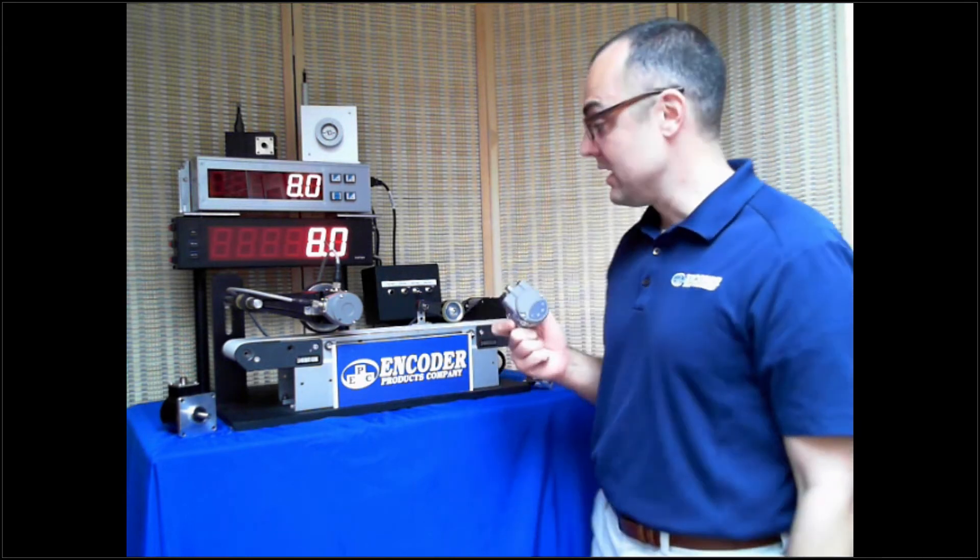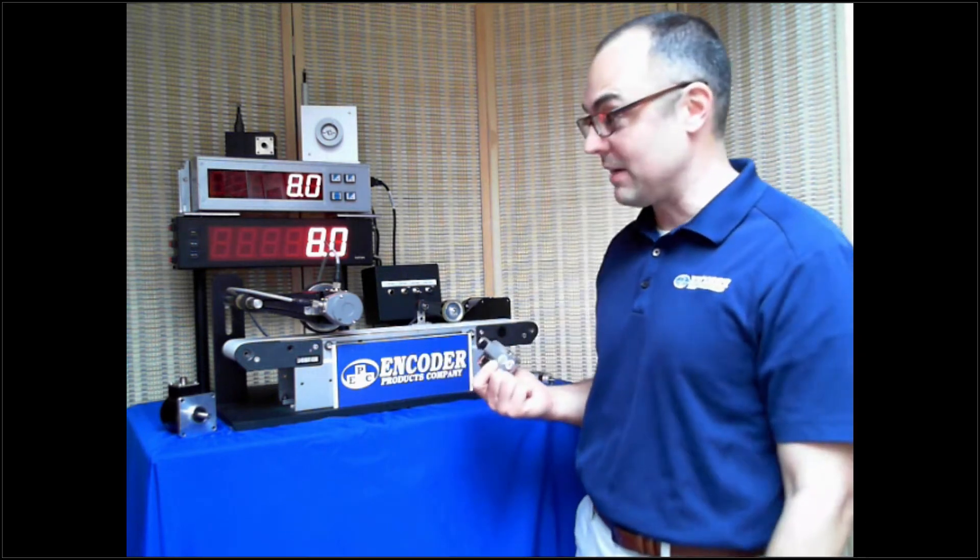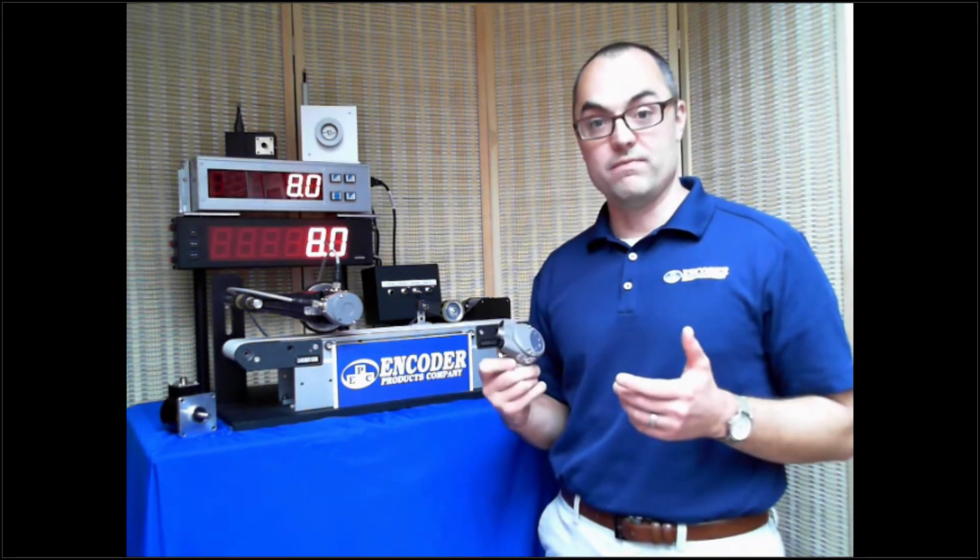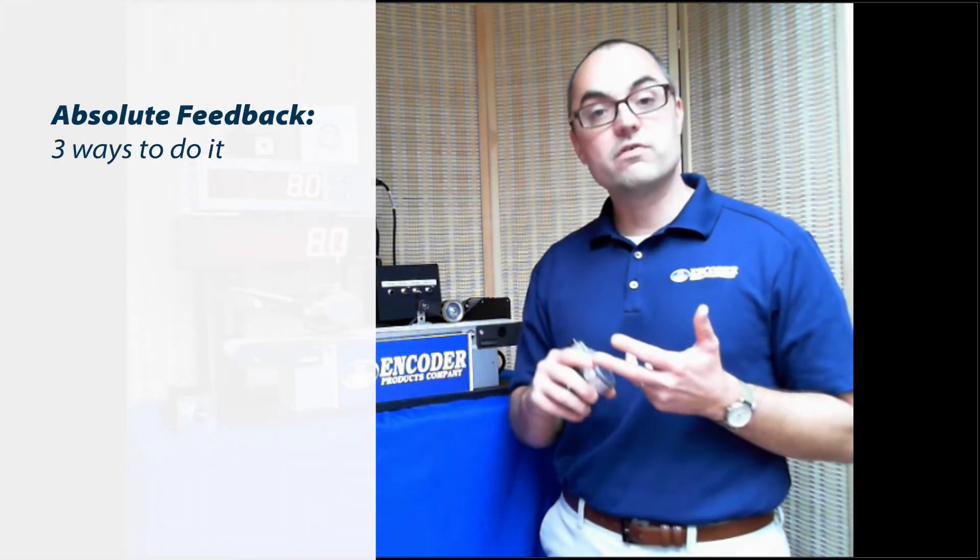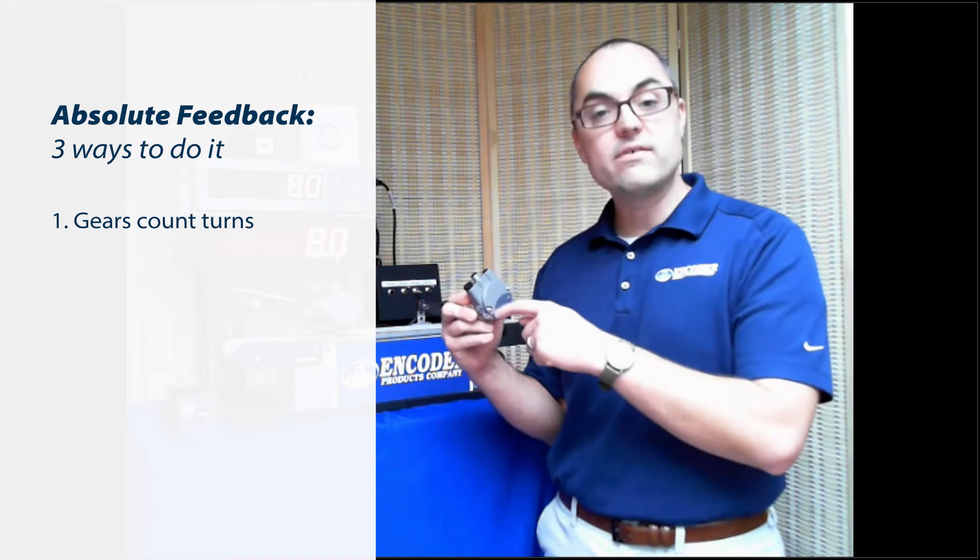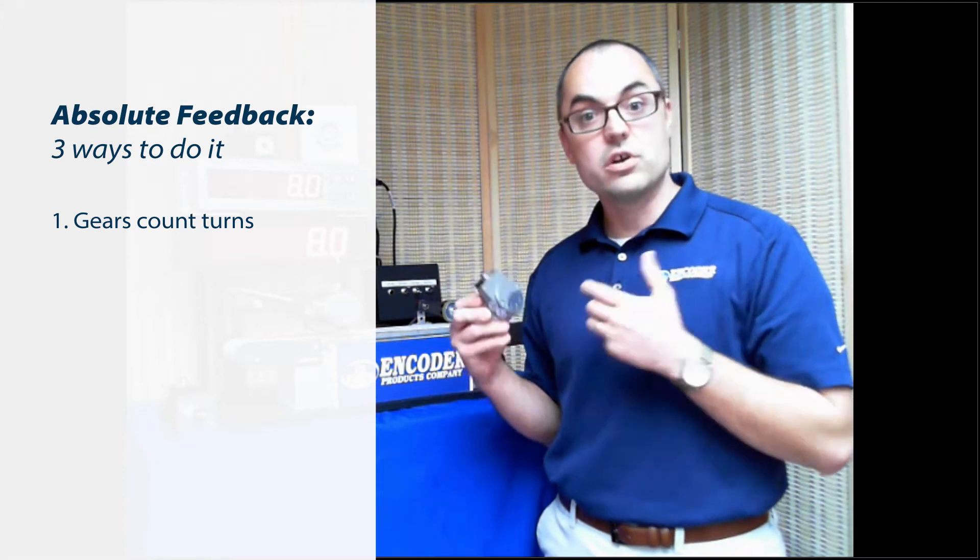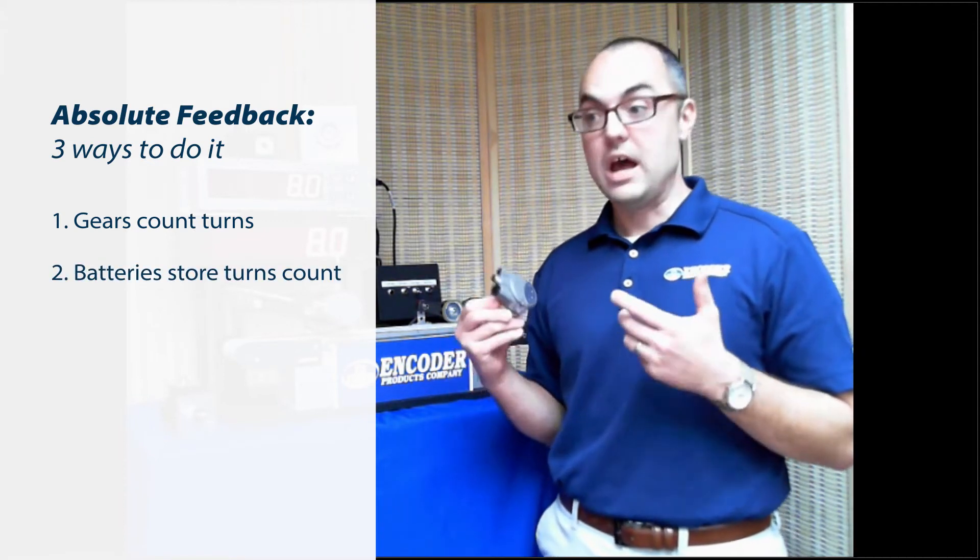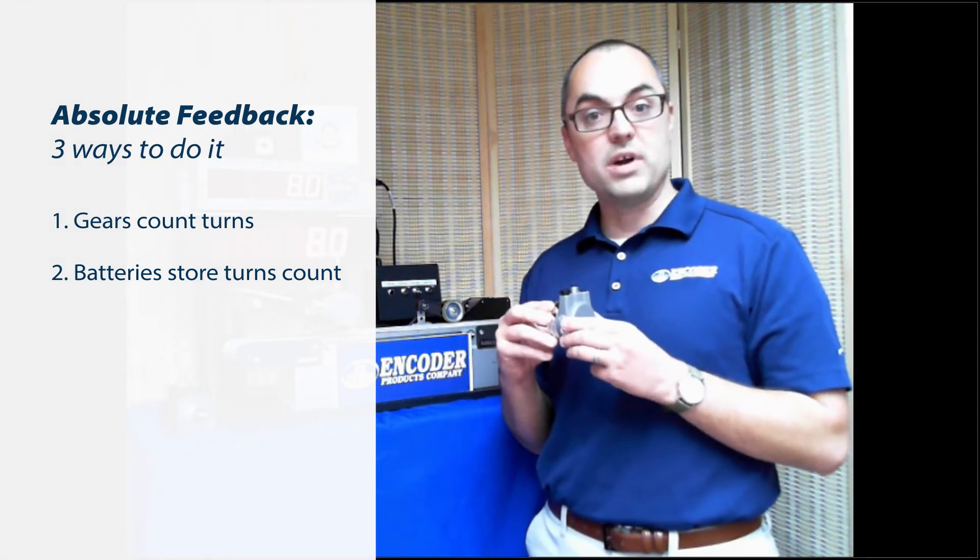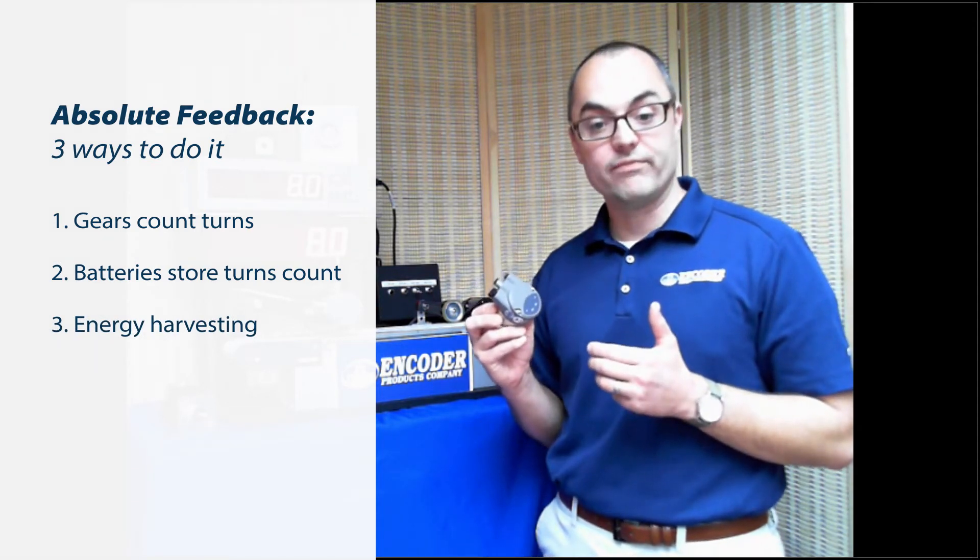Now, our multi-turn encoders are pretty special. And you may say, well, counting turns is counting turns. If I went four times around, your encoder better say four, not five. Well, how it's accomplished is actually very important. There's three main ways to do it. There's the use of gears, which you think of watches. A lot of encoders today, if you were to take a back cover off, they would have gear trains in the back, little plastic gears to establish how many turns you've counted. You can also use a battery backup system to establish how many turns by storing that count in memory. Or the third way, which is the newest way, is through a process called energy harvesting. And that's what our multi-turn encoders do to establish a multi-turn count. Well, now, why do you care? Let me show you.